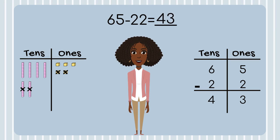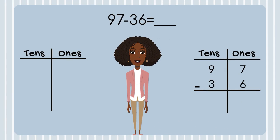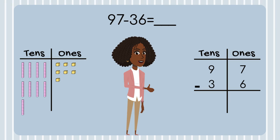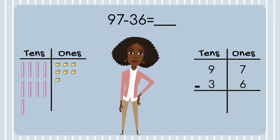You're really getting the hang of this. I think you're ready to try one on your own. Your equation is 97 minus 36. What number will you model with place value blocks to help you subtract? That's right — 97, because it's your total. Which place value spot will you start subtracting in? The ones place. You're doing great. What is 7 minus 6? Be sure to use the place value blocks to help you subtract.